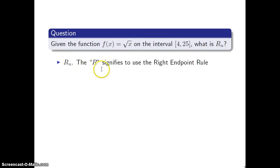Given this function f(x) equals square root of x on the interval x starts at 4 and goes up to 25, what is R_n? By using this R, this signifies that we're using the right endpoint rule. The starting x value a is 4, the ending x value b is 25. So you could actually compute the width of the entire interval, 25 minus 4, or 21.